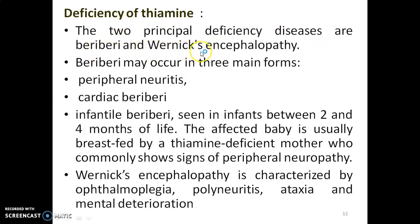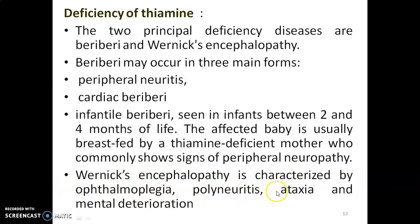Beriberi may occur in three main forms: peripheral neuritis, cardiac beriberi, and infantile beriberi, seen in infants between two and four months of life. The affected baby is usually breastfed by a thiamine-deficient mother who commonly shows signs of peripheral neuropathy. Wernicke's encephalopathy is characterized by ophthalmoplegia, polyneuritis, ataxia, and mental deterioration.